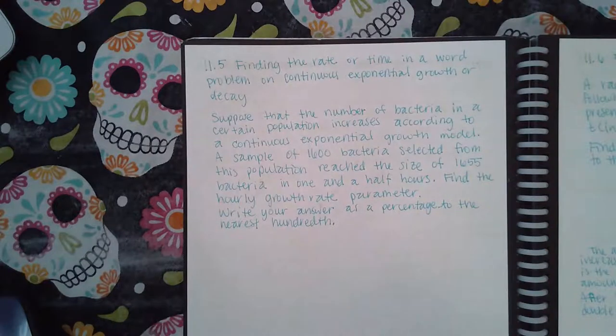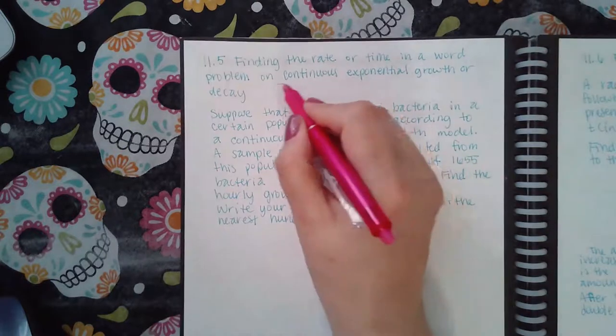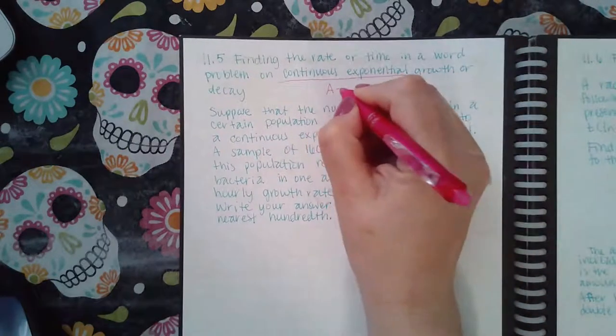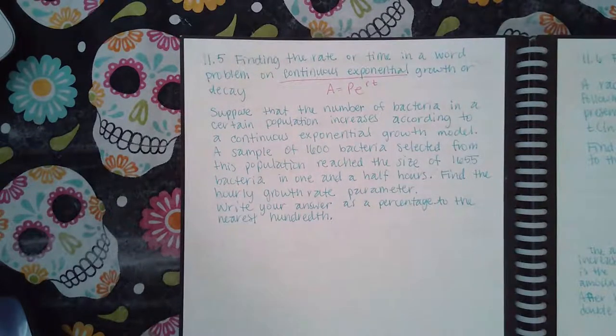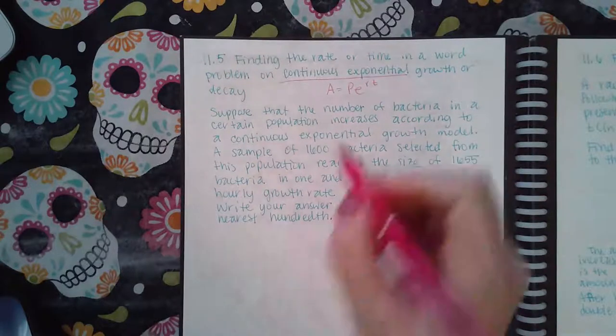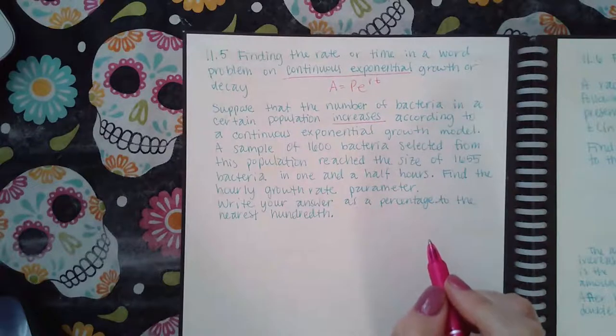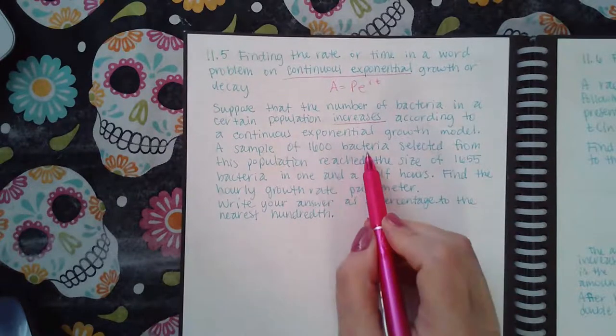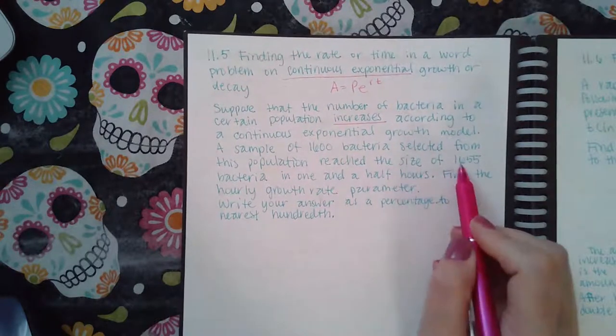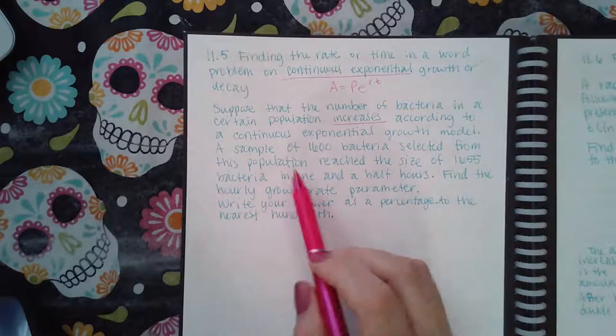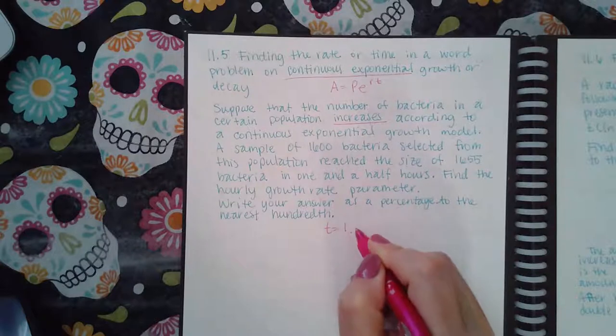Okay, this is finding the rate or time in a word problem on continuous exponential growth and decay. It says suppose that the number of bacteria in a certain population increases according to an exponential growth model. A sample of 1600 bacteria selected from this population reached the size of 1655 bacteria in one and a half hours, so t is 1.5.